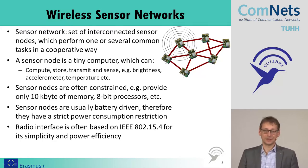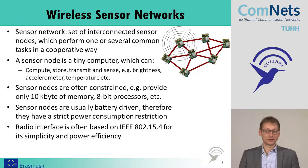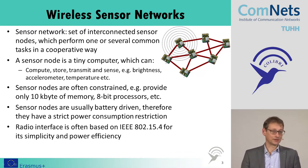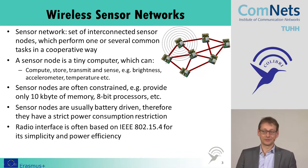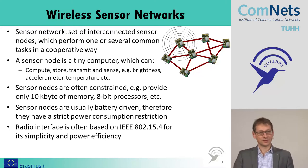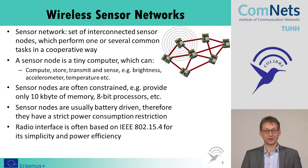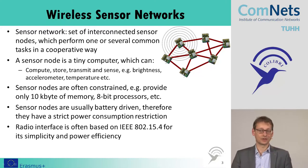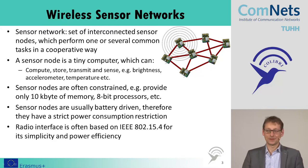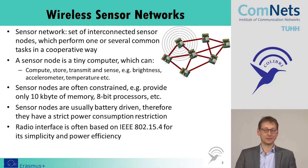A sensor network is a set of interconnected sensor nodes which perform one or several common tasks in a cooperative way. That is the idea which we have. And the sensor node is something that I just described — it is this tiny computer which can compute, store, transmit, sense, and maybe actuate.